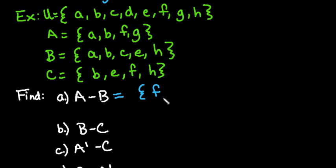We can see that F and G are the only two letters that A contains that are not also in B.